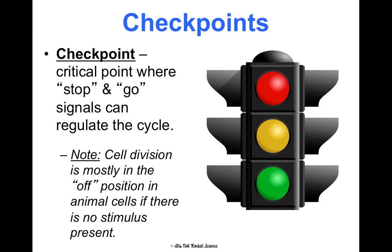In general, cells tend to be in the off position — the red light position — unless there's some sort of stimulus telling them they need to start dividing. So in general, they're just in interphase and not really dividing.